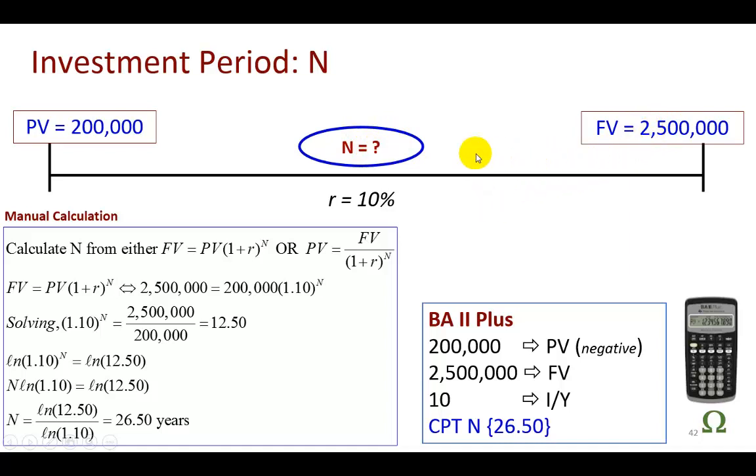So anyhow, this is actually solving for N. You can solve for N using the future value formula or present value formula. Future value formula looks more linear. So you can define it and solve for N, as I show here. And you're going to find it to be 26 and a half years.